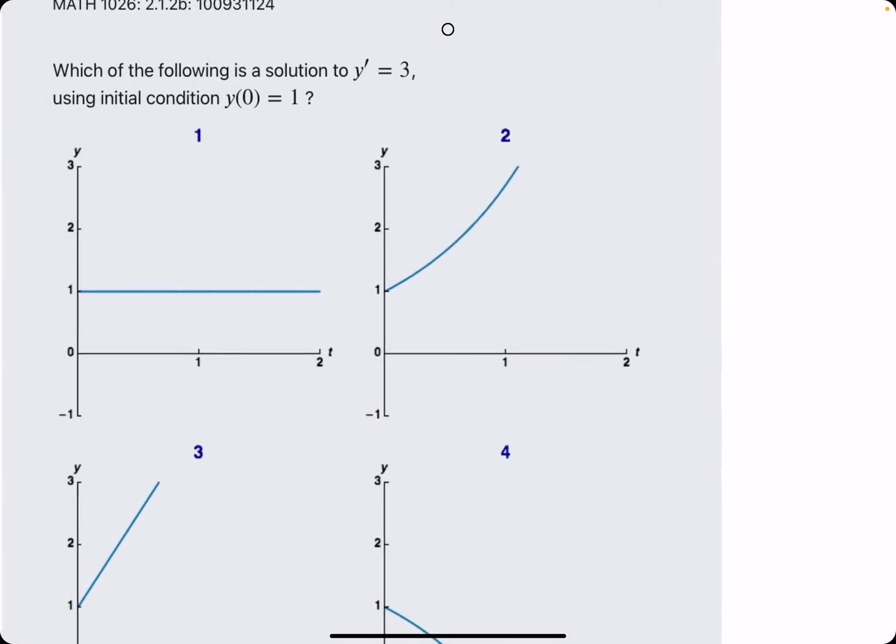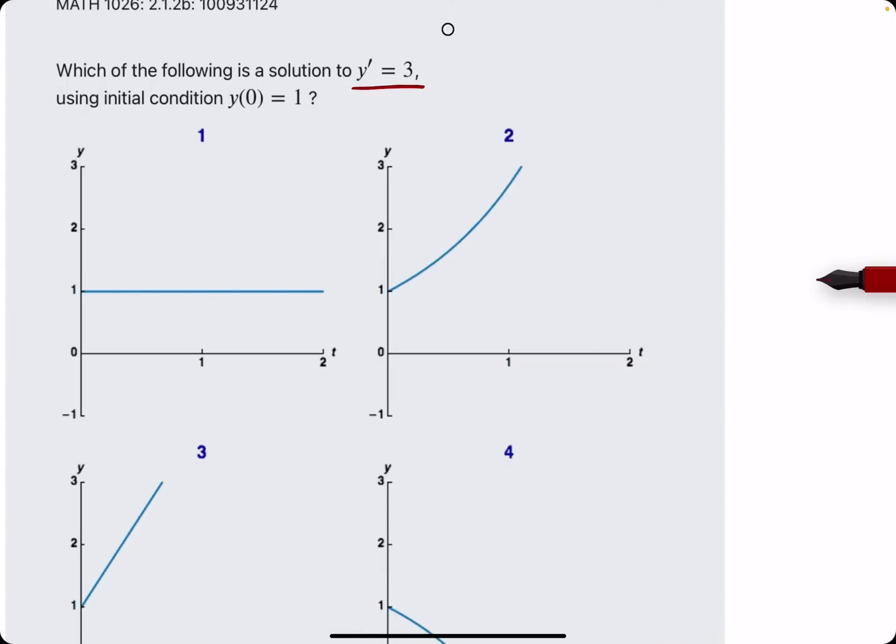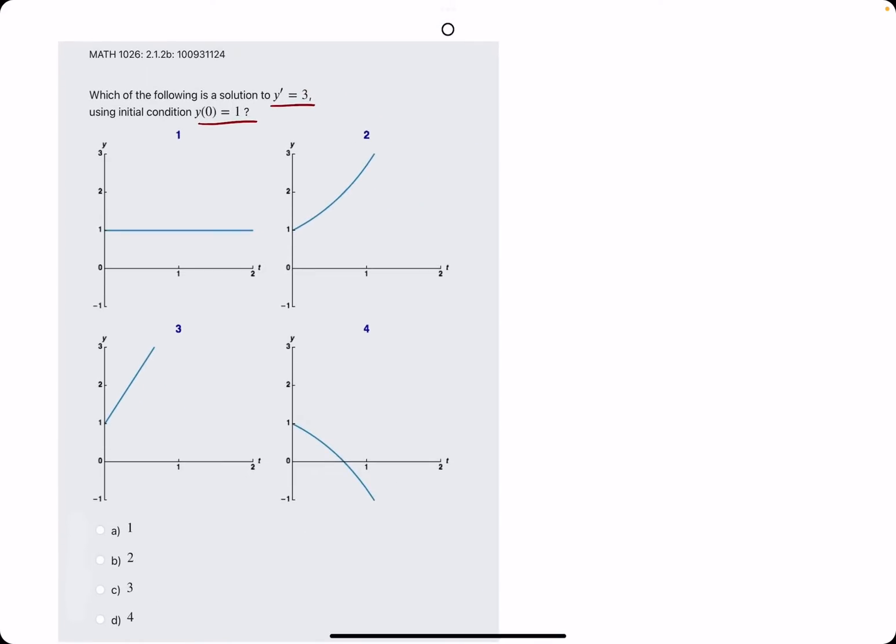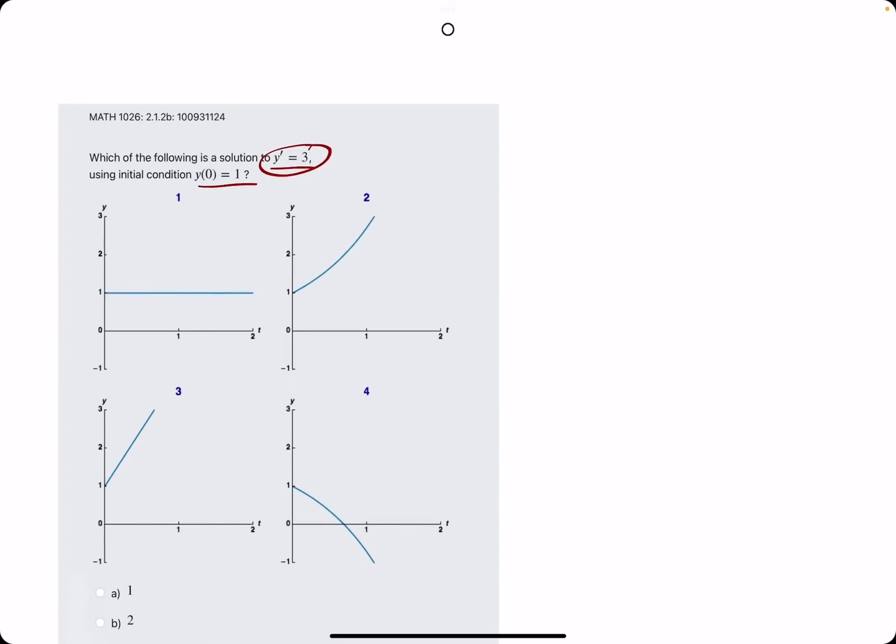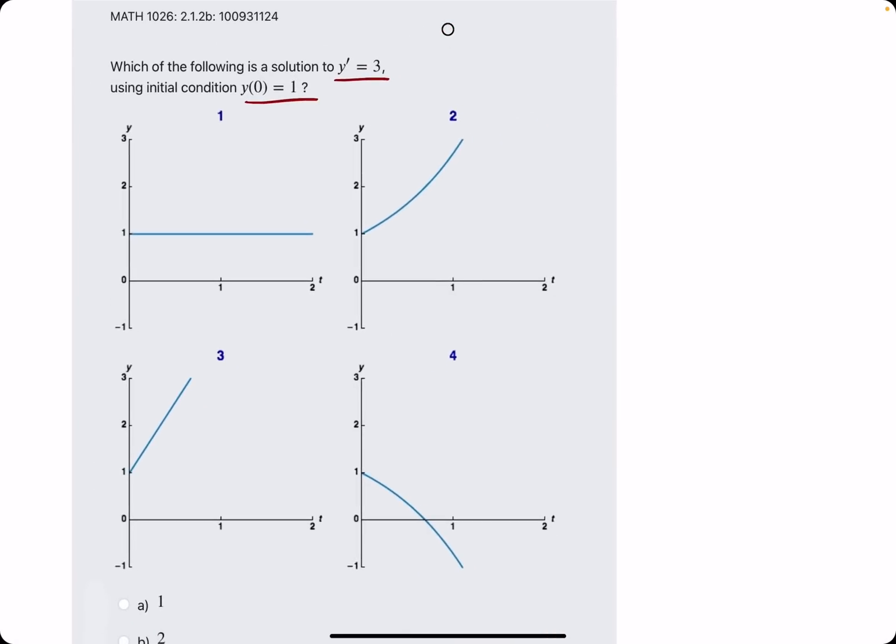All right, one more. This is a fun one. It just says that y prime is equal to 3, so there's nowhere to plug in any values. But what it does tell us is that the y prime or the slope is consistent or is constant the entire time. So looking at these graphs, which one even has a slope of 3 the entire time?